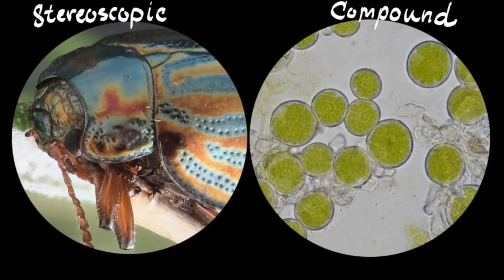One big difference between the compound microscope and the stereoscopic microscope that we just looked at is what type of specimen can be viewed. We saw that the stereoscopic microscope is good for observing larger objects such as bugs or our fingerprints.